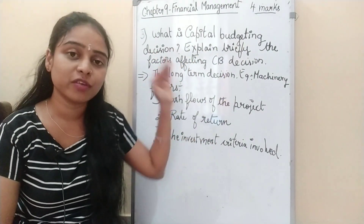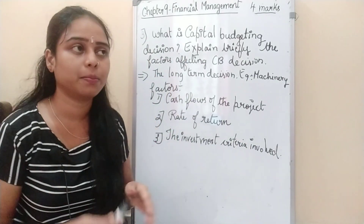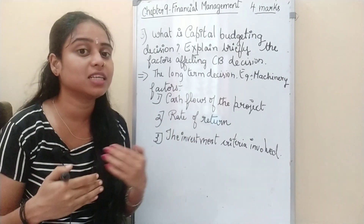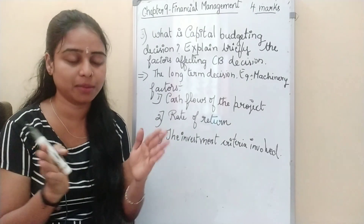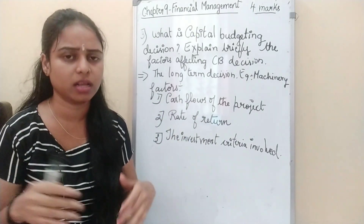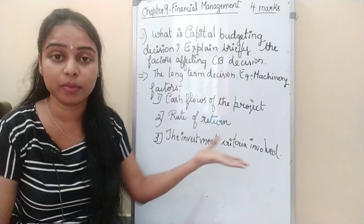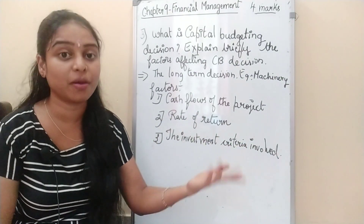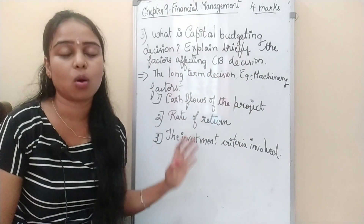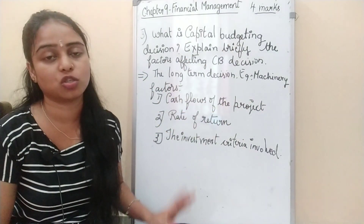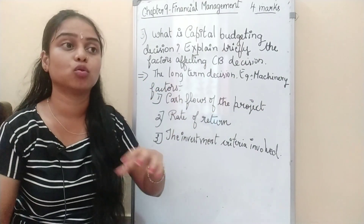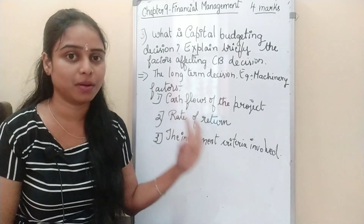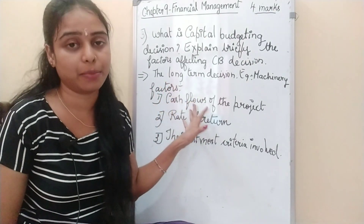For example, in a company when a machine becomes old, we replace it with a new machine. It is a long-term decision — we don't change machines every year; it could be after 10, 20, 40, or 50 years. Such decisions are called capital budgeting decisions. Another example is setting up a new branch or expansion of a branch — all these come under capital budgeting decisions.